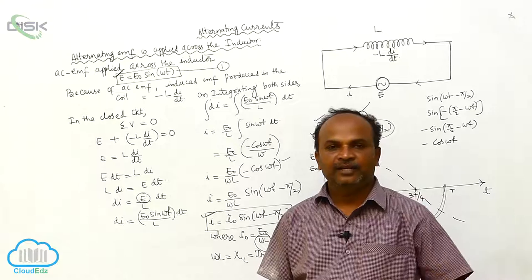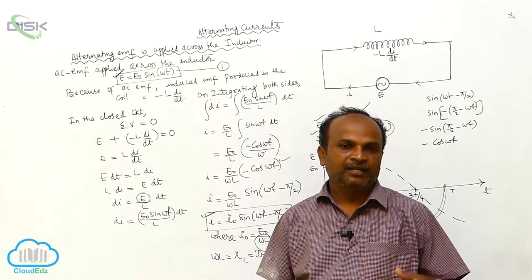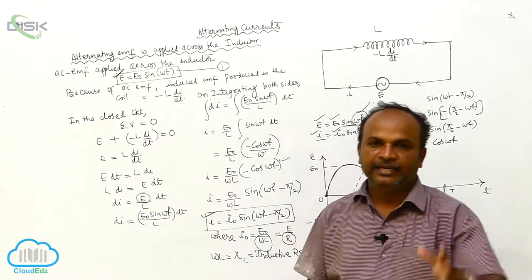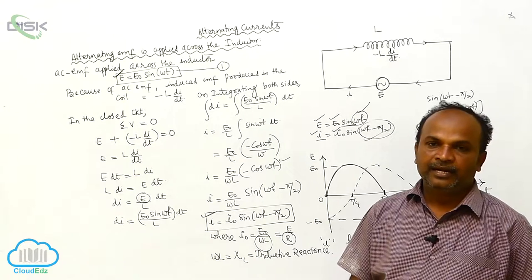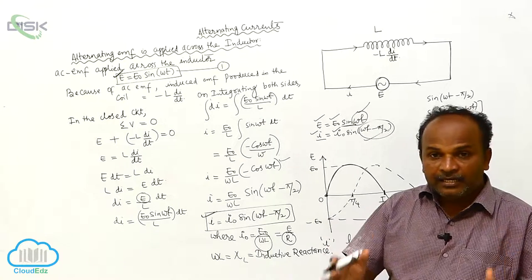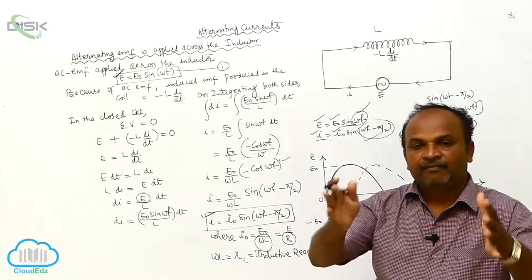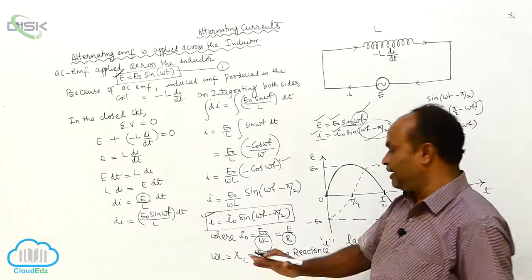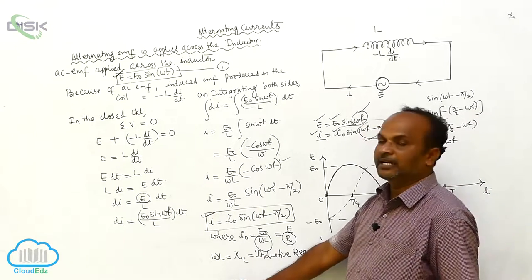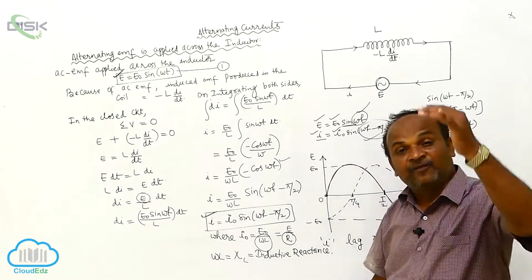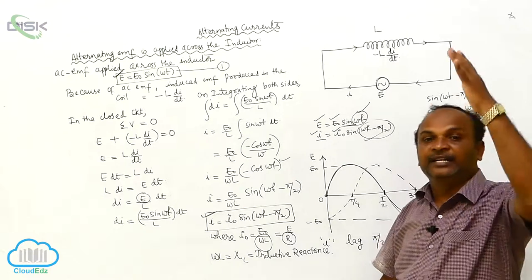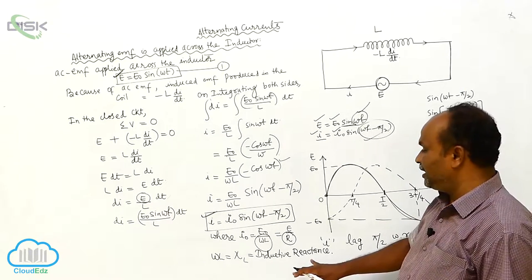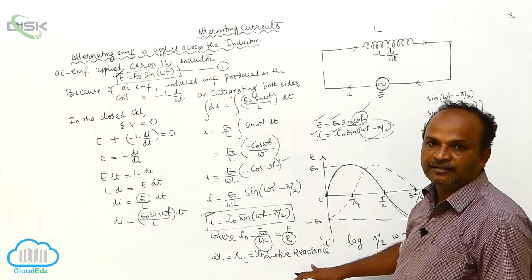In the circuit, there are so many elements — resistance is there, capacitor is there, and inductor is there. The inductor offers some resistance to the current. That is called inductive reactance.